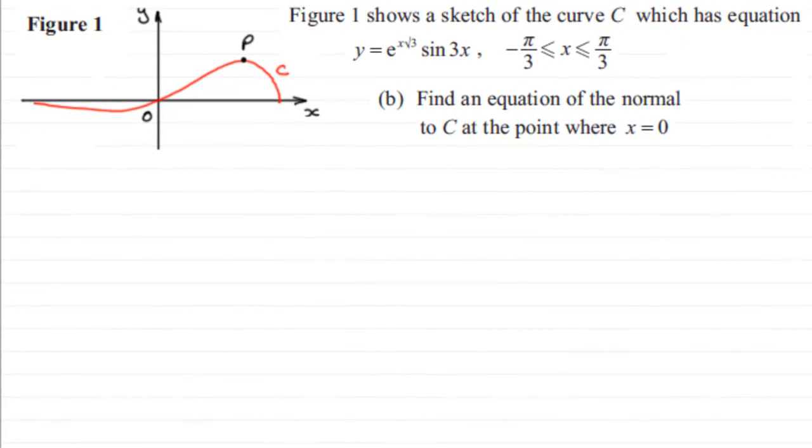Hi, now for this part of the question we're asked to find the equation of the normal to the curve C at the point where x is zero. In other words, what we've got to do is find the equation of this line here going through the origin, at right angles to the tangent.